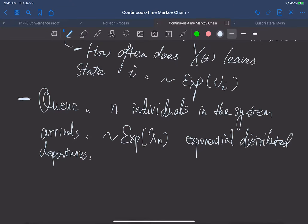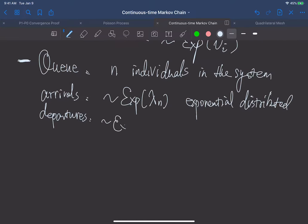Which means its average is 1 over λ_n. And the departures is of rate μ_n. And of course, this is also exponentially distributed. Think about in the bank, so whenever someone gets the service from a bank, and after he finishes his service, he'll leave the bank. And then this is a departure.